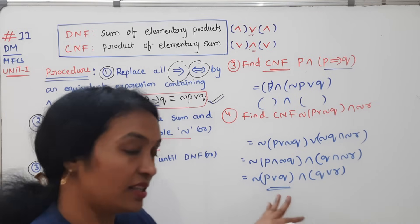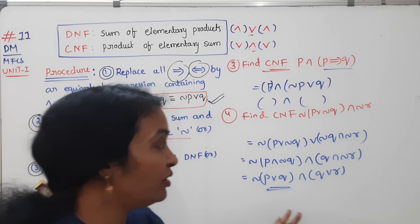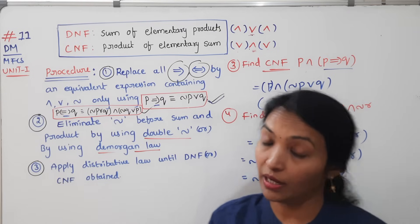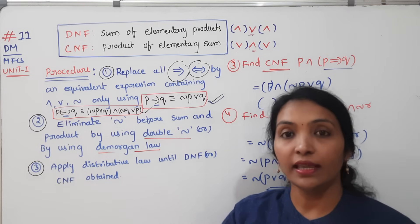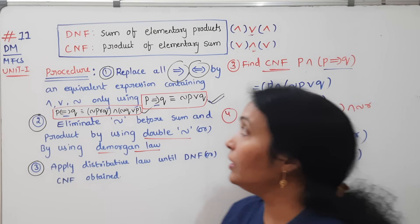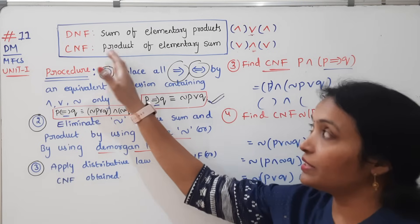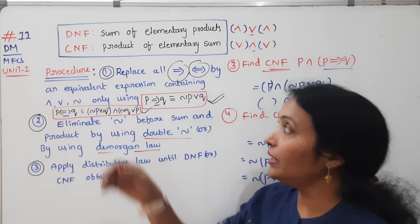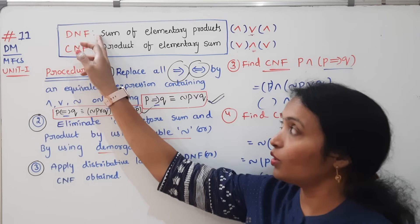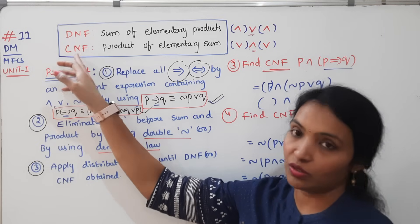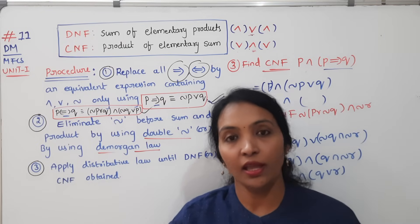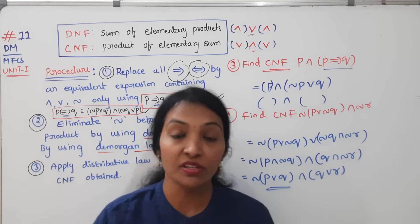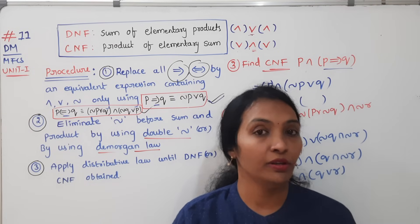If you want to watch this video, share my videos, like and comment. Next class we will look at PDNF and PCNF — Principal Disjunctive Normal Form and Principal Conjunctive Normal Form. Thanks for watching, all the best for your exams. These are very important videos.